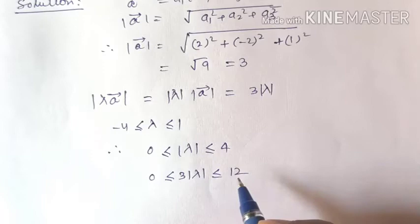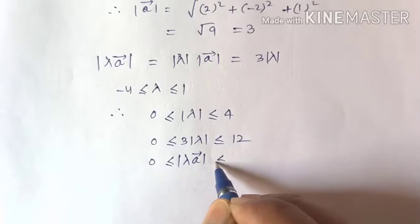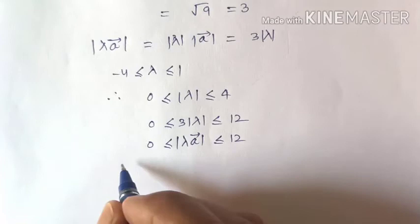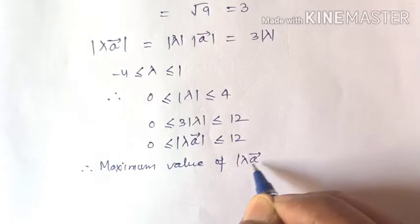So modulus of lambda a is more than or equal to 0 and less than or equal to 12. The question asks for the maximum value of modulus of lambda a, therefore the maximum value of modulus of lambda a is equal to 12.